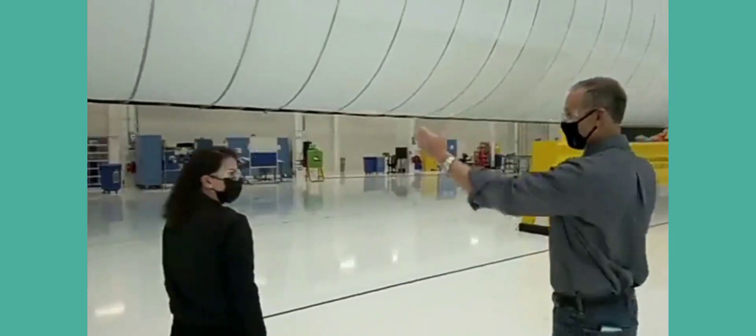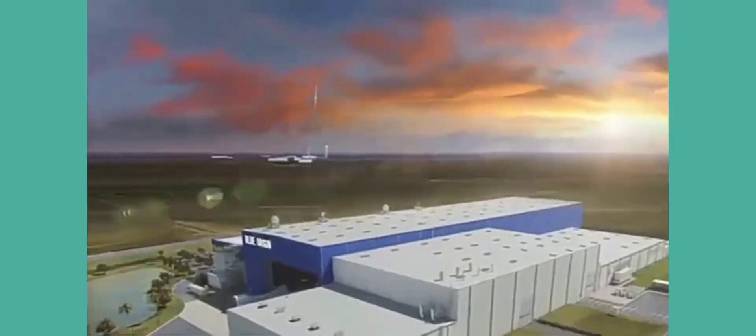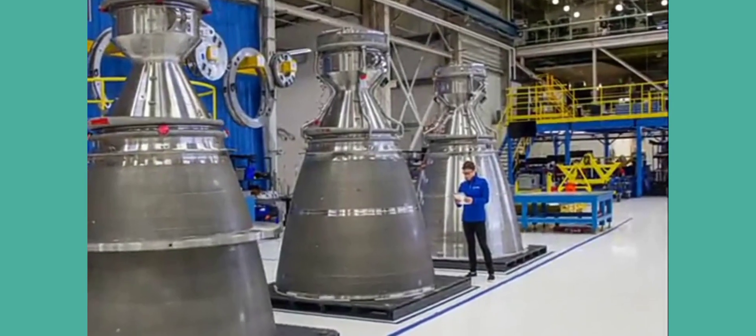Final engine selection by ULA happened in September 2018. Although previously planned to fly as early as 2019, the first flight test of the new engine is now expected no earlier than 2022 on the Vulcan rocket.